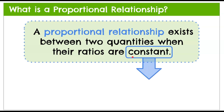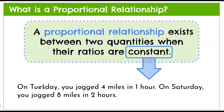A proportional relationship exists between two quantities when their ratios are constant. To understand what constant means, let's look at a simpler relationship. On Tuesday you jogged four miles in one hour, then on Saturday you jogged eight miles in two hours. We can look at this to see if there's a proportional relationship — if the relationship is constant between the two.